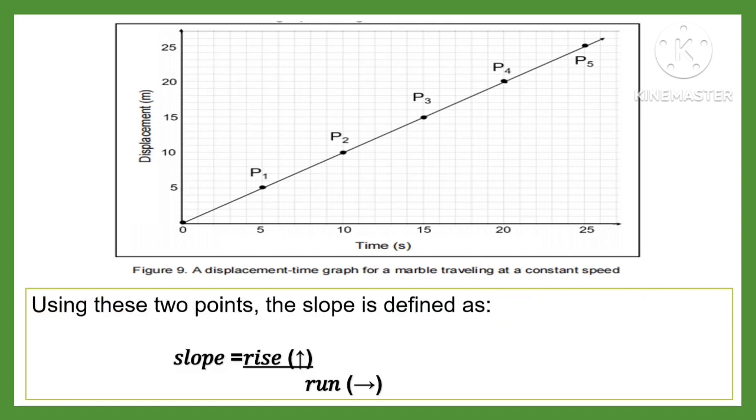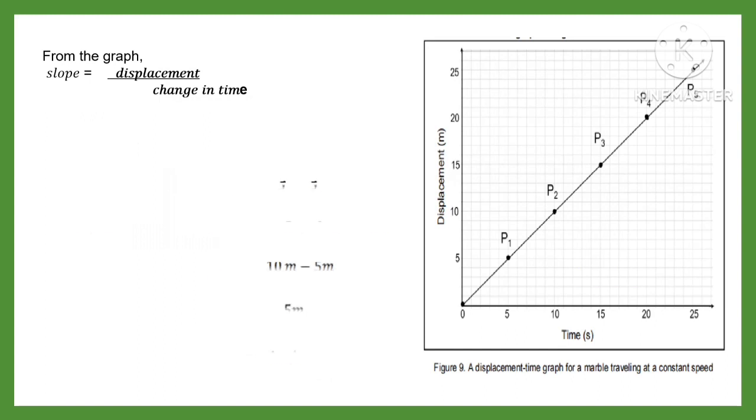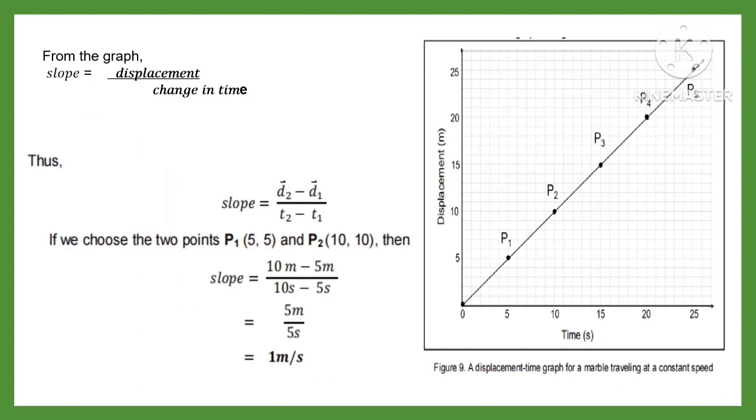Using these two points, the slope is defined as slope equals rise divided by run. From the graph, slope equals displacement divided by the change in time. Thus, using the formula, slope equals displacement 2 minus displacement 1 divided by time 2 minus time 1.